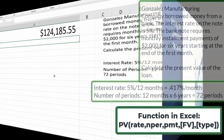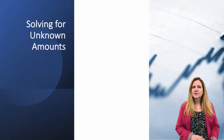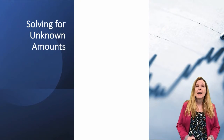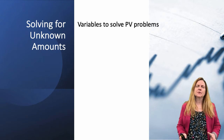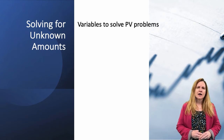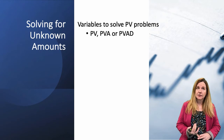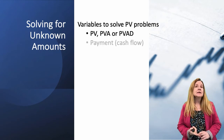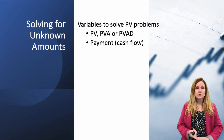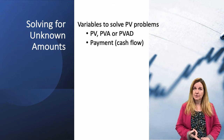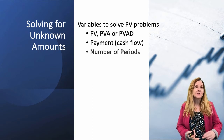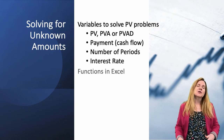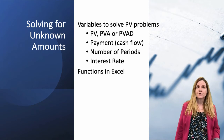That was the loan amount. Now we're going to talk about solving for unknown amounts. There are multiple variables we work with in time value of money: present value, present value of an annuity or annuity due, the payment itself — the actual cash flow — the number of periods, and the interest rate. There are two functions we're going to talk about to solve for those.